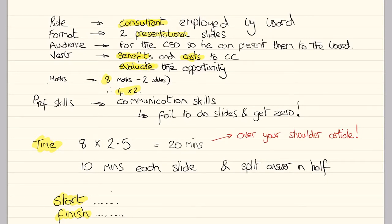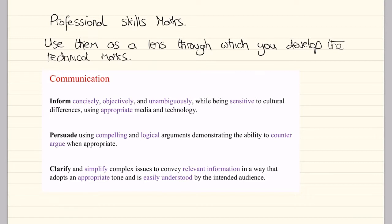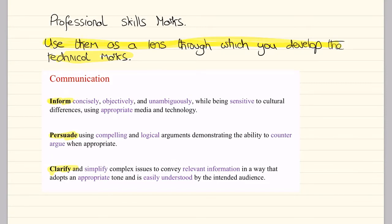We should always start by looking at the professional skills marks. Professional skills marks here are for communication. There is detailed help available on the ACCA website, but briefly we need to inform, persuade, and clarify — try and remember those headings. Use these professional skills marks as the lens through which we develop the technical marks. When thinking about our answer to gain technical marks, we need to make sure we are informing, persuading, and clarifying what we're saying — simplifying things to make them less complex.